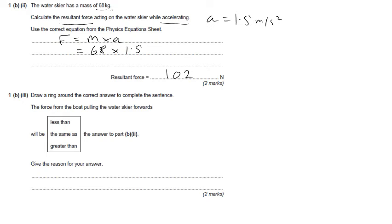Now this is the resultant force on the water skier. So the resultant force there is our 102.